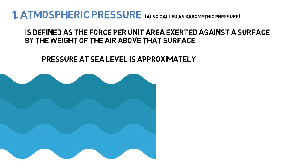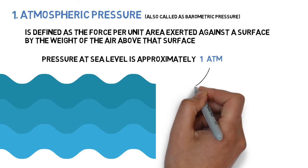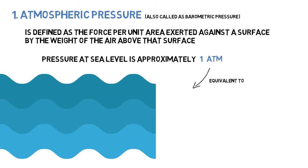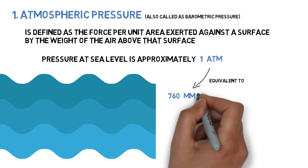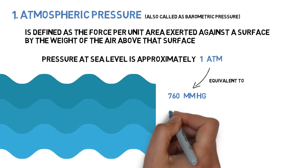Pressure at sea level is approximately 1 atm. Pressure has many units. Here is the equivalent pressure in different units.